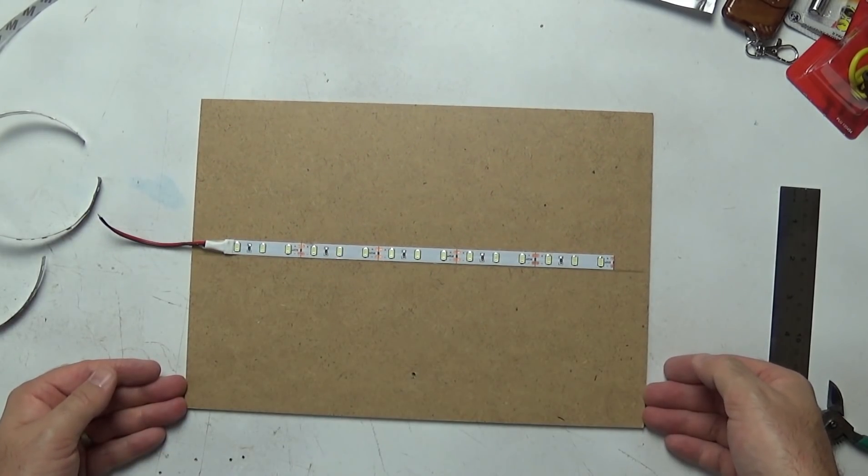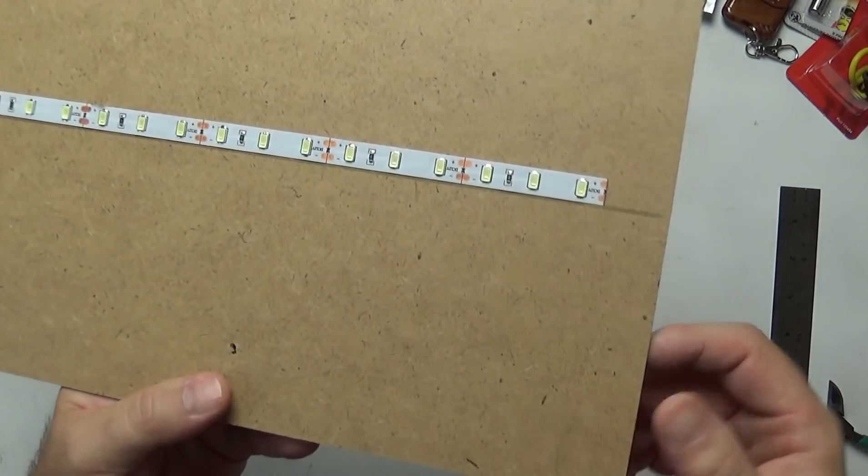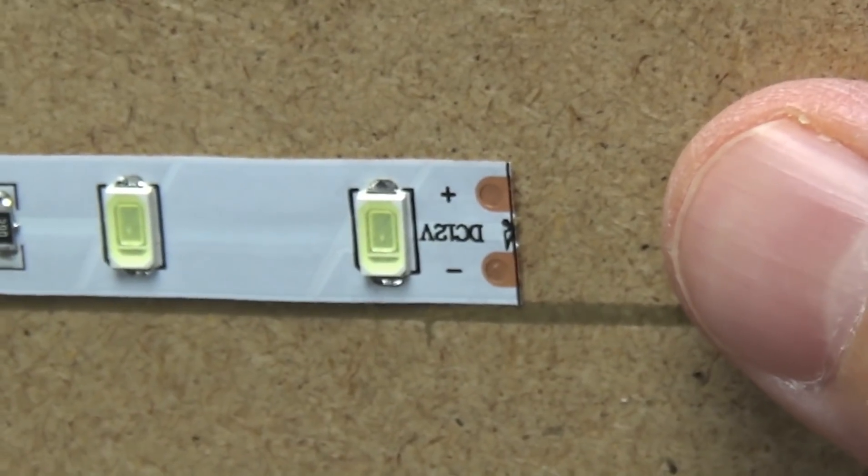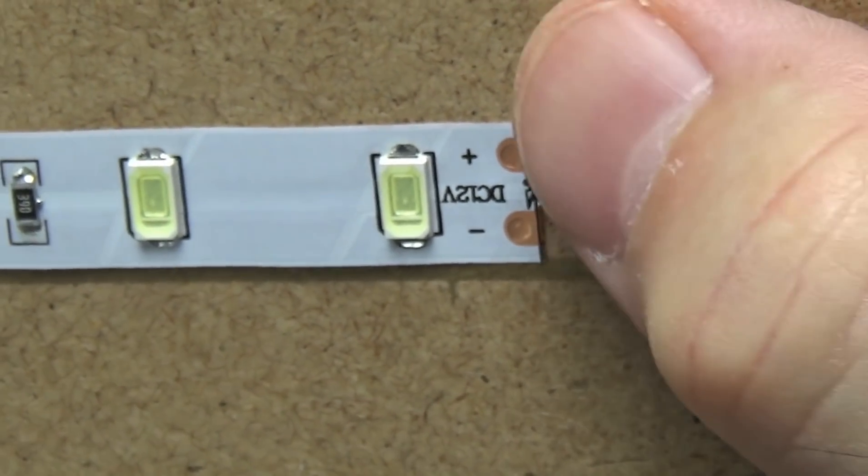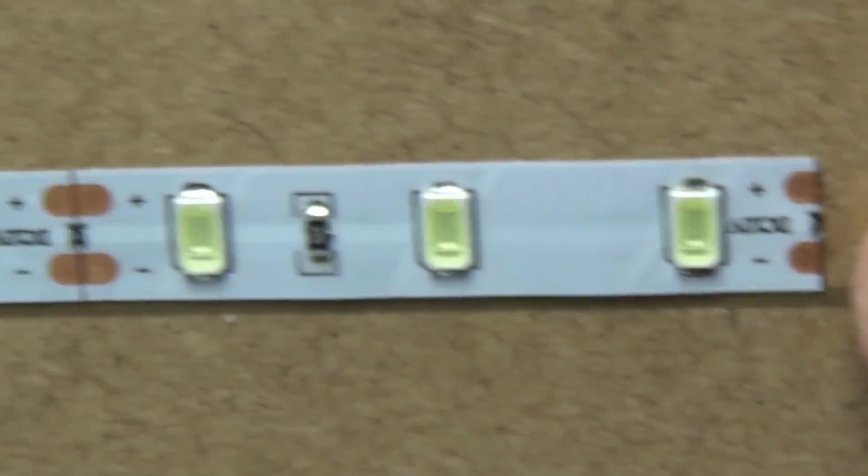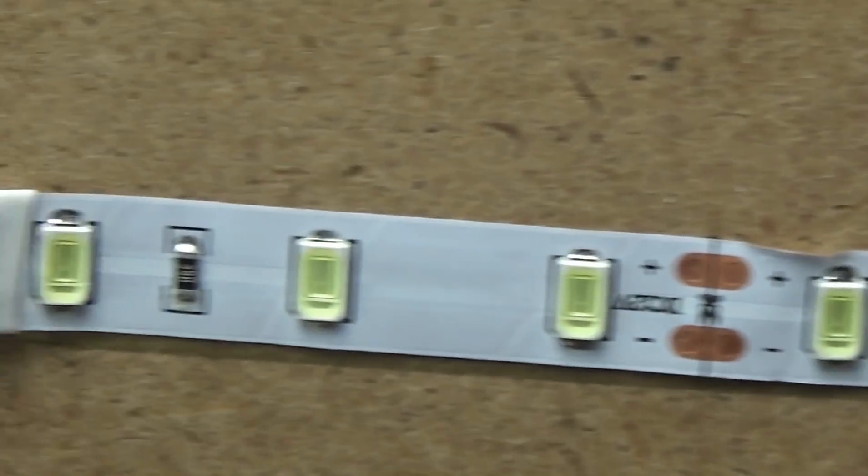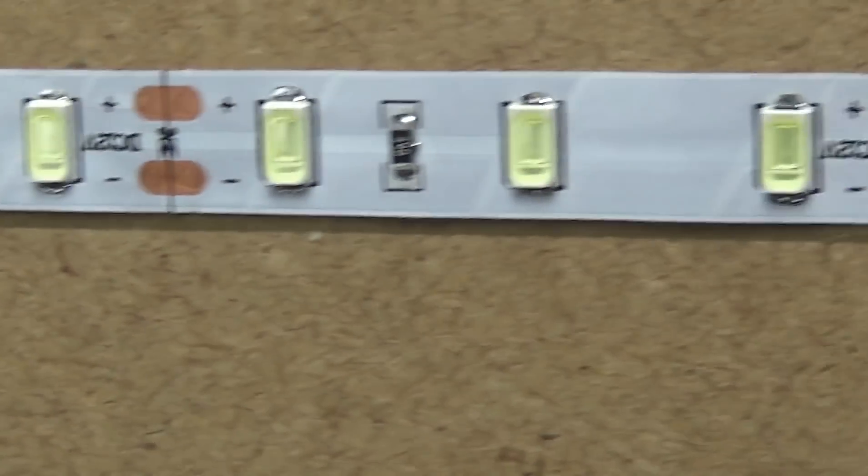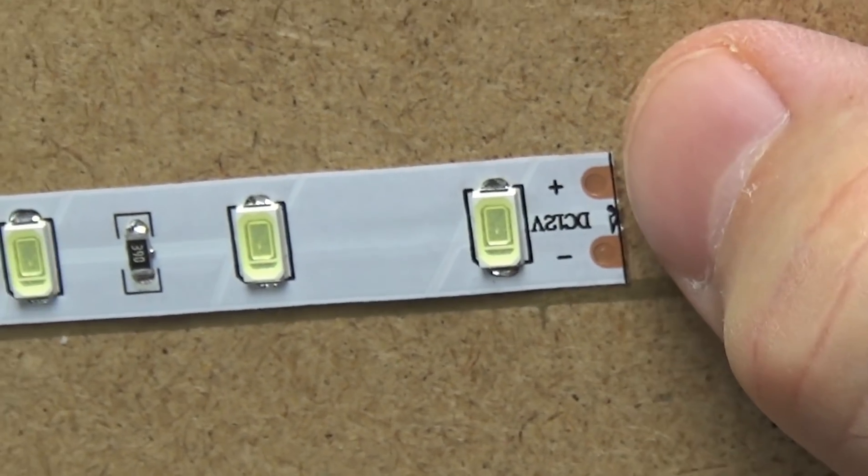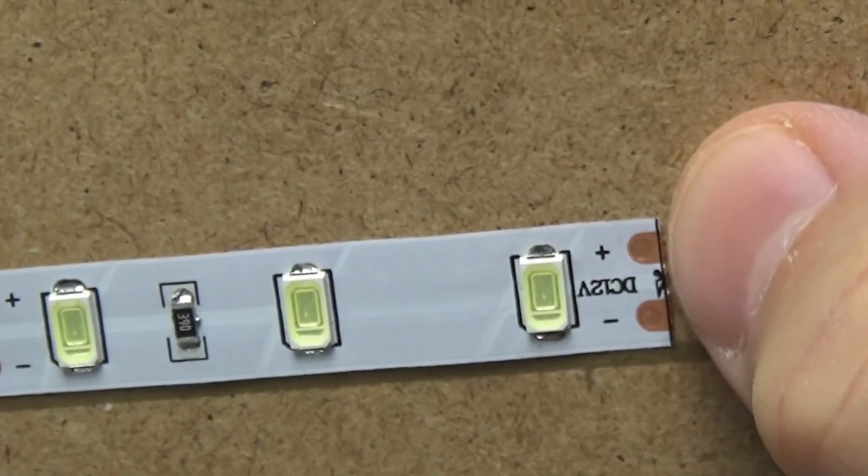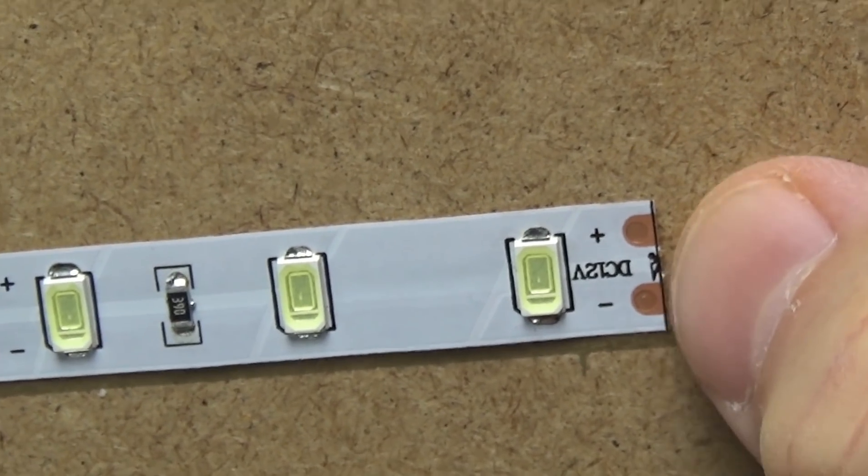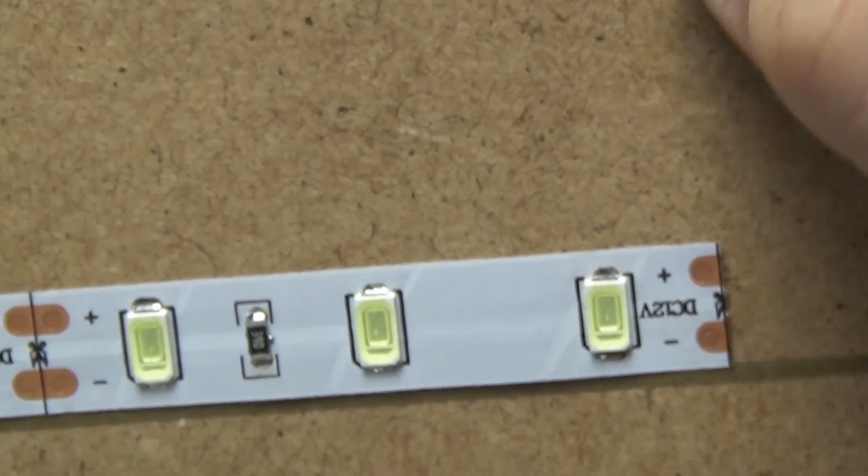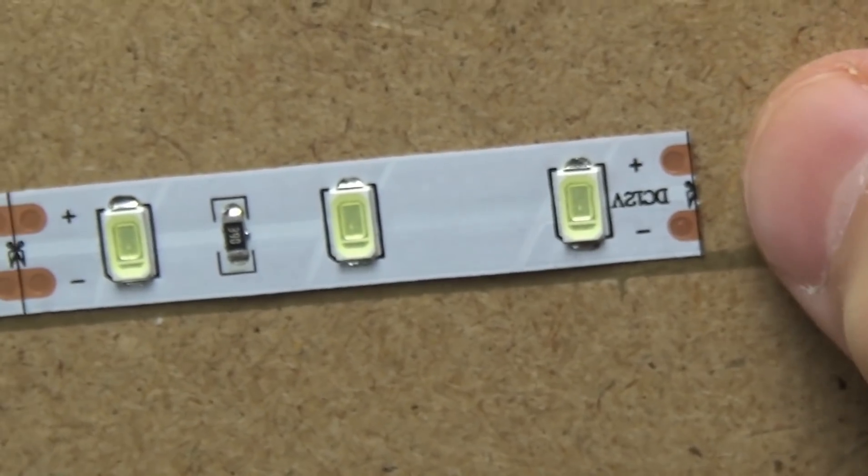Now before you get too far into this, take note of what I've got here. So as you can see there, as they're stuck down, there is a positive and a negative line all the way across, and in this case I've got a couple of wires hanging out that end. But this part is important, so always have the positive at the top and the negative at the bottom, and just keep sticking your LED strips next to each other.